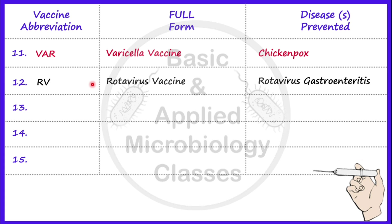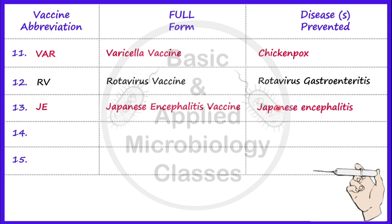Now let's talk about the next vaccine, that is JE. JE stands for Japanese Encephalitis vaccine, and it provides protection against Japanese encephalitis disease. It is a viral disease caused by a virus, and the route of administration for this vaccine is intramuscular.